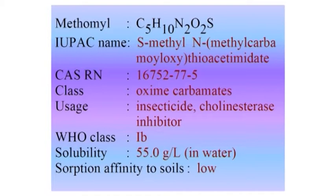Methomyl is an insecticide and nematocide, and like some other closely related carbamate pesticides, methomyl acts by inhibiting the acetylcholinesterase enzyme. Methomyl is a very toxic and hazardous compound. Characteristics very significant for it are its solubility and its sorption affinity to soils.